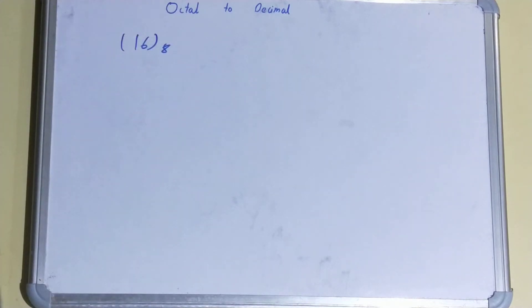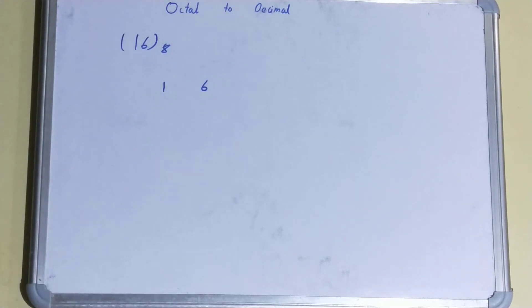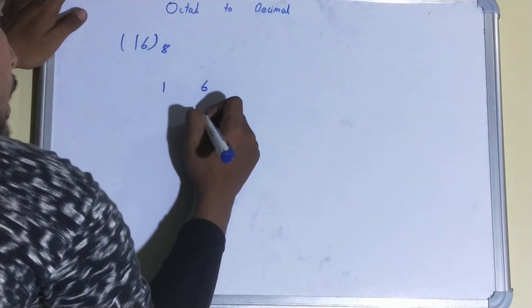So what we'll do is write it over here and take the help of the power method. Whatever the base is, that is your 8, so we will write 8 below all the digits.